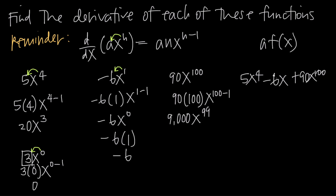Now what do we do when we have a polynomial function, which is the sum of all three of these terms? When we take the derivative of a function that is just the sum or difference of multiple power function terms, we can take the derivative of each term individually. The derivative of 5x⁴ is 20x³, the derivative of negative 6x is negative 6, and the derivative of 90x¹⁰⁰ is 9,000x⁹⁹. The derivative of the entire combination is just the sum of the derivatives of each individual term. That's how you use power rule to find the derivative of a function.